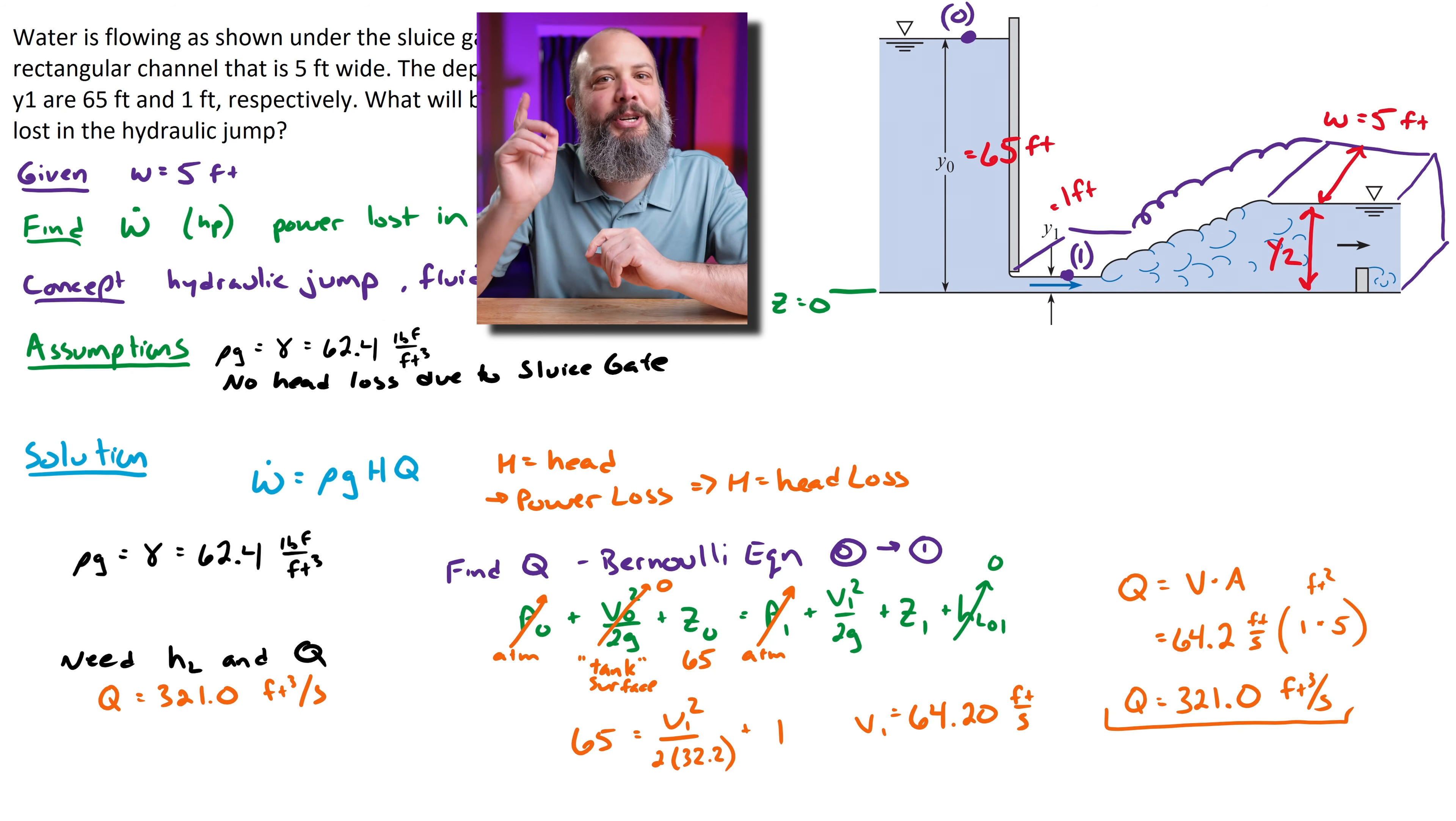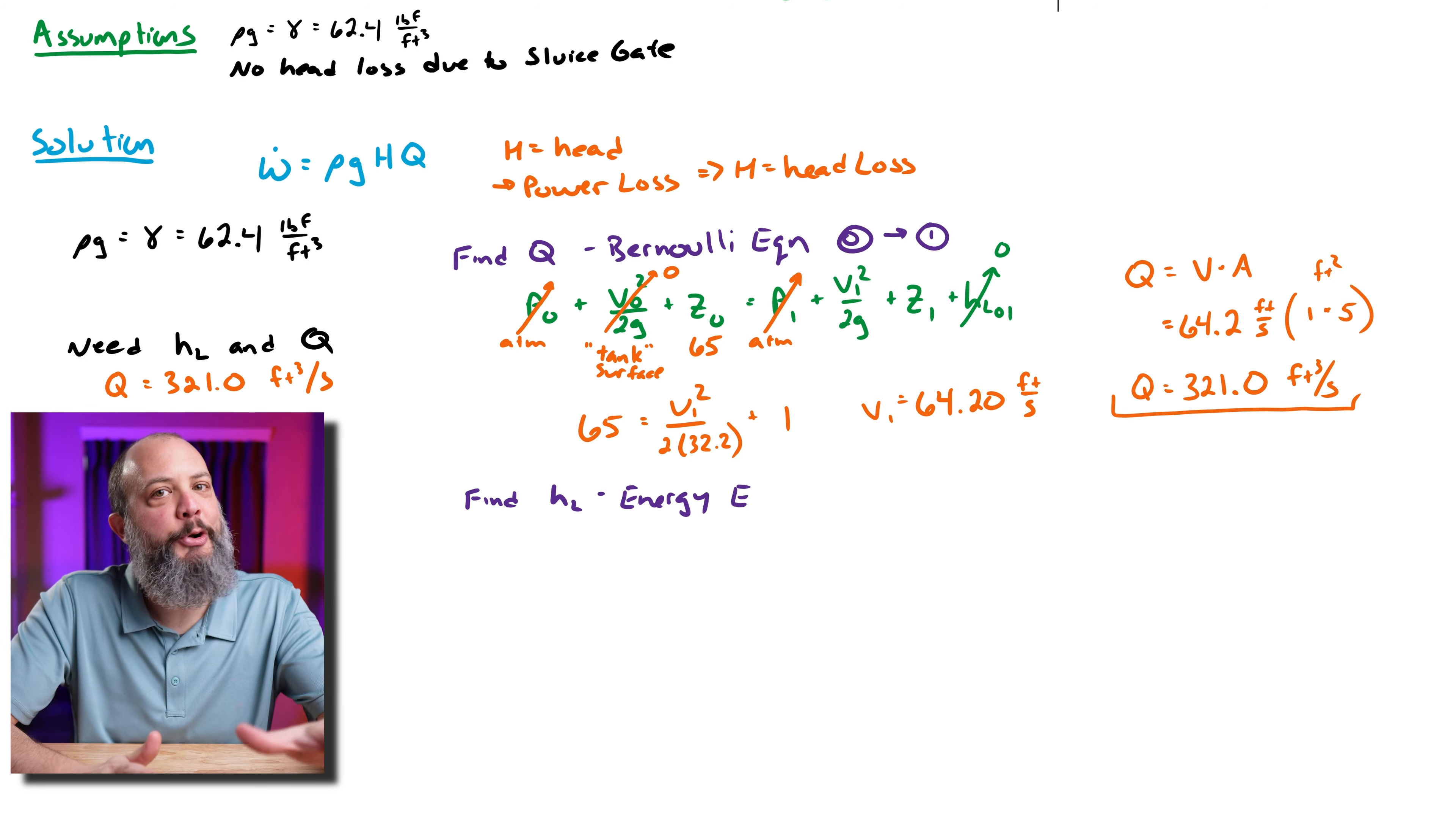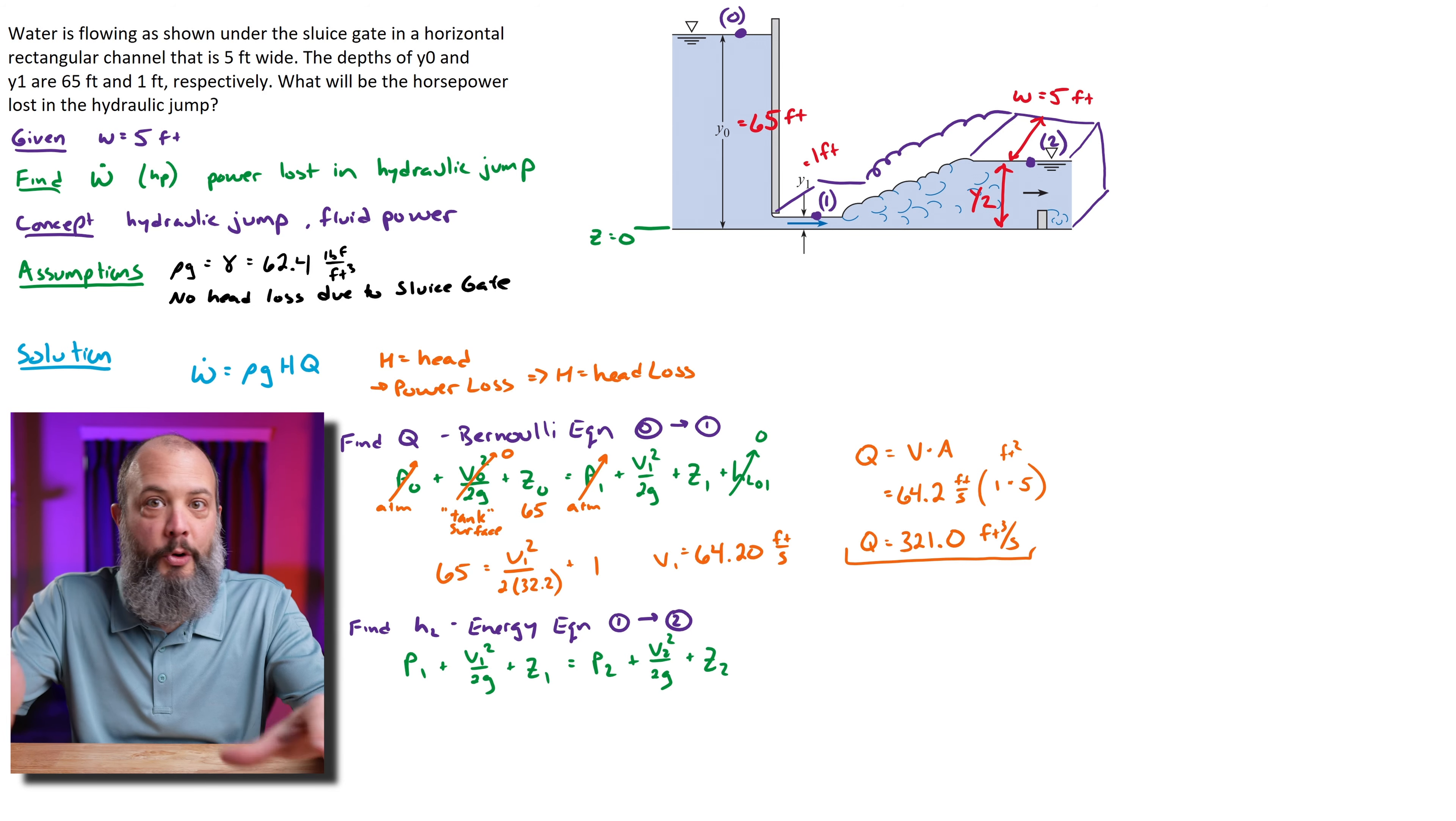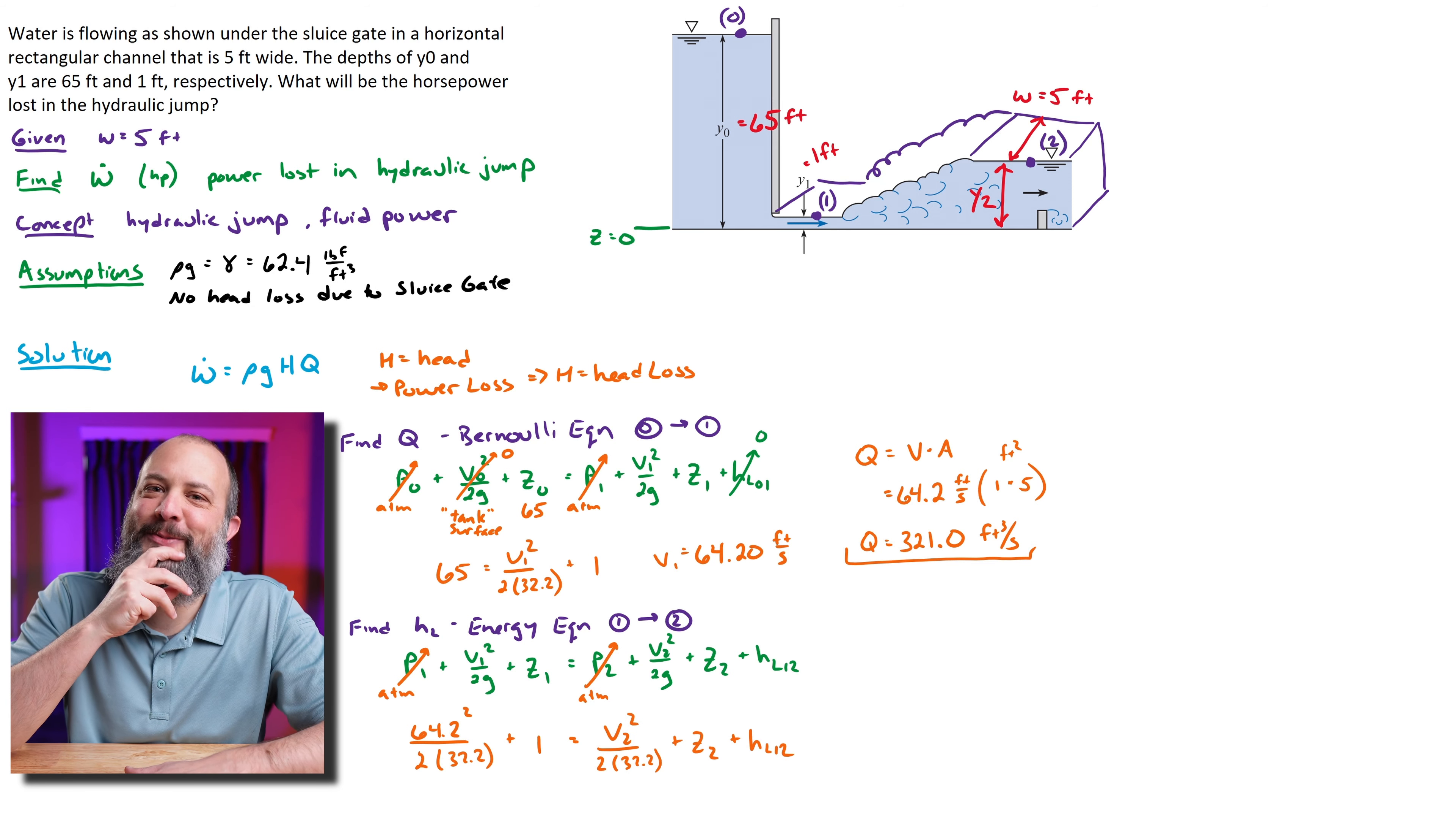With that information we're now set to actually solve for information about point 2. This time we'll use the energy equation, not Bernoulli equation, because we do want to include head loss. Setting up my relationship from point 1 to point 2, I can still cross off the pressure terms because point 1 and point 2 are both atmospheric pressure. I know velocity 1 so I can put in my 64.2 ft/s for v₁. I know z₁ is my height, that's the 1-foot tall height. But on the right-hand side it's a little frustrating—I still have three unknowns.